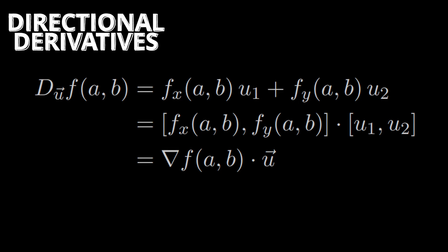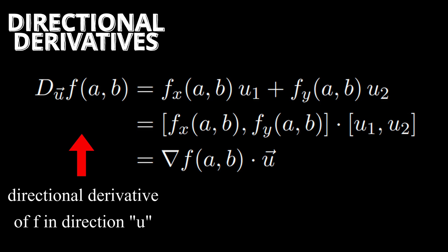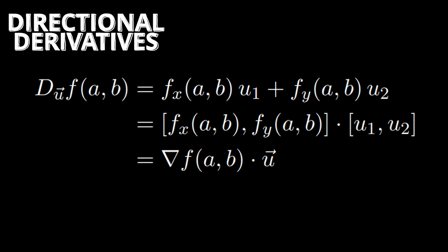It's the rate of change of a function at any particular point with a fixed direction. A common denotation of the directional derivative is like this, where the left-hand side says the directional derivative of the function f in the direction u, and the right-hand side is the gradient of f dot the unit vector u.